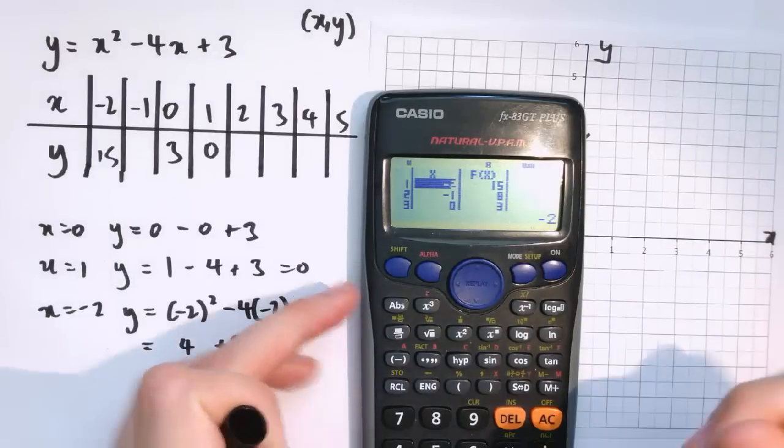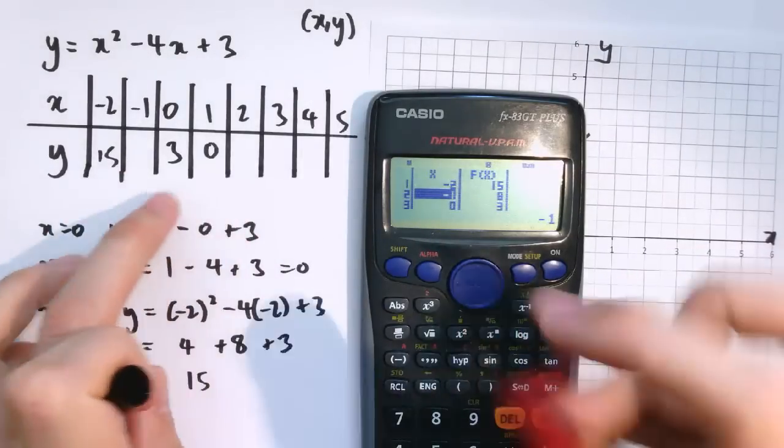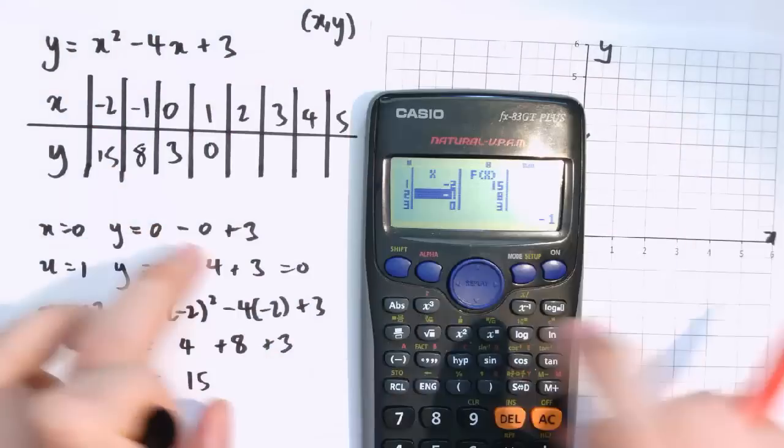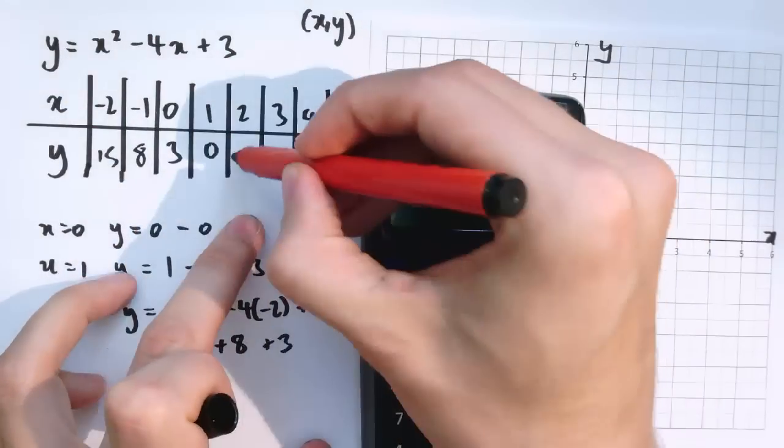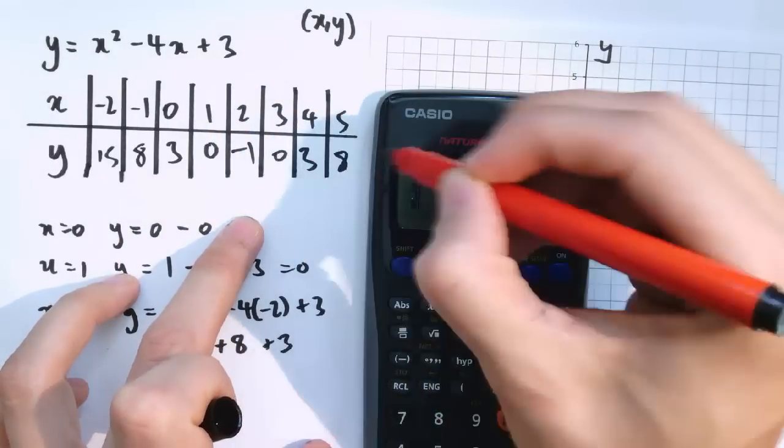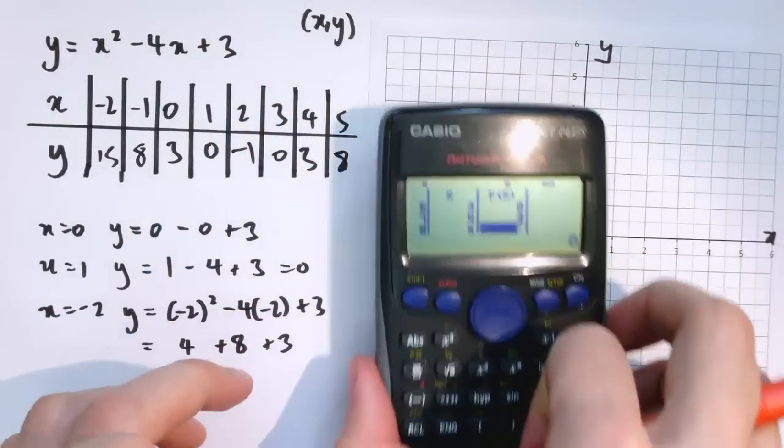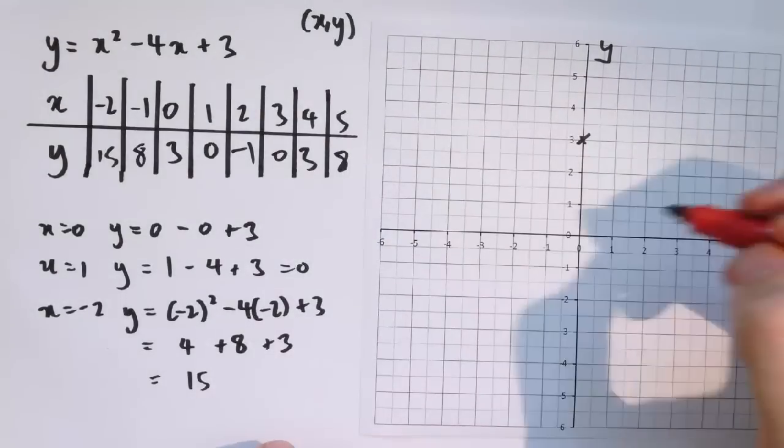What it'll do is just generate me a table here. So it says x equals minus 2, y equals 15, x equals minus 1, y equals 8. So there we go, I don't need to work that one out. The other values, we've got 3, 0, minus 1, 0, 3, 8. And there we go, I've been able to fill that table in really quickly, and now I can use that to plot this graph.